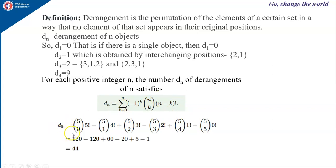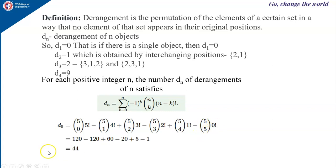If you go for finding d5, the formula gives: k varies from 0 to 5. For k=0 it is positive, giving 5C0 times 5 factorial. Then minus 5C1 times 4 factorial, plus 5C2 times 3 factorial, minus 5C3 times 2 factorial, plus 5C4 times 1 factorial, minus 5C5 times 0 factorial. This comes to be around 44.